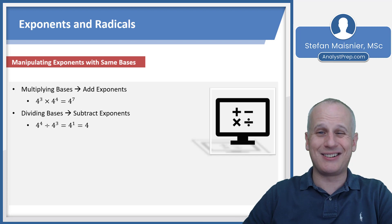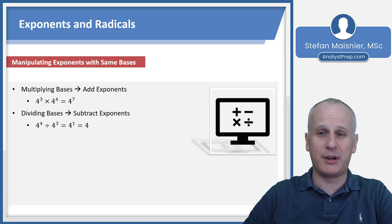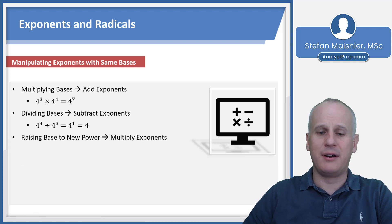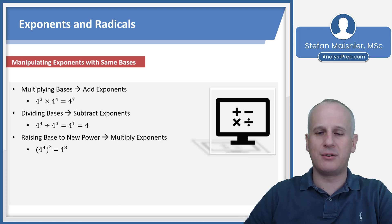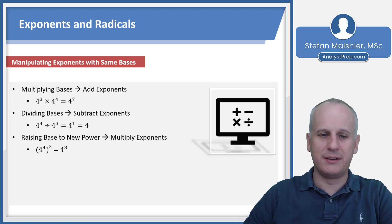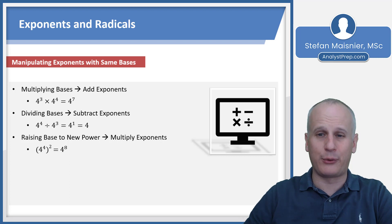Remember that just as there is always an implicit denominator of 1 for all integers, there is also an implicit exponent of 1 for all integers. If you raise a base to a new power, you multiply your exponents. For instance, 4 to the 4th raised to the 2nd power gives 4 to the 8th — you have 4 fours multiplied together, and you're multiplying that product times itself, which is another 4 fours, hence 4 to the 8th.